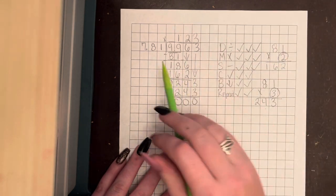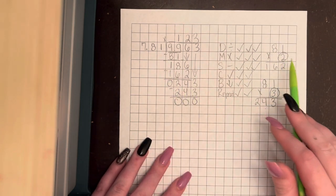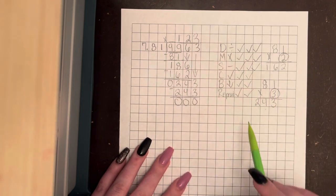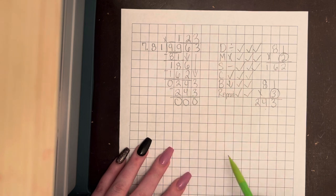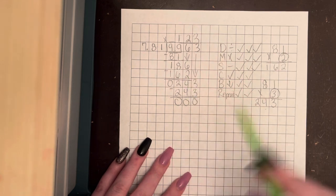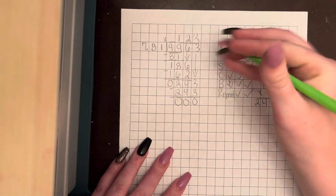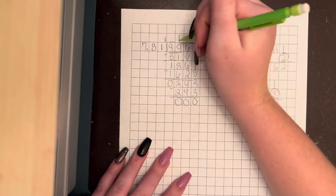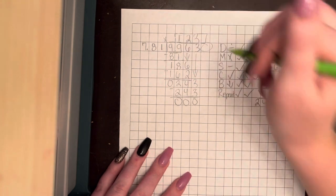Now we check. 81 into 243. We knew we needed bigger than 2. So we tried 3. 3 times 1 on top. 3 times 81 is 243. 3 minus 3 is 0. 4 minus 4 is 0. 2 minus 2 is 0. We're good. Bring down. We have nothing to bring down. So we are done. And our answer is what is on top. That's our quotient.